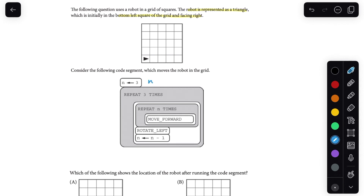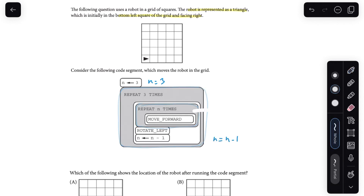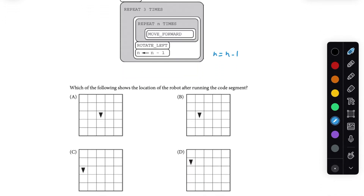First, we set n equal to three, and then we have this outer loop which we'll repeat three times. Inside of that, we have another loop where we repeat that logic n times. We move forward n times and then continue with the rest of the logic for the outer loop — we rotate left and set n equal to n minus one. It asks which of the following shows the location of the robot after running the code segment, with four grids showing the robot in different parts.